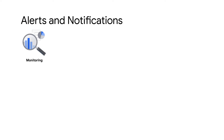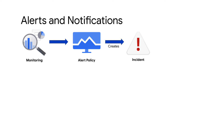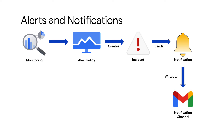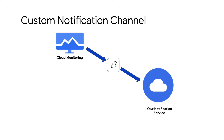A basic monitoring and alerting pipeline looks something like this. A cloud ops admin creates alerting policies to detect important events in their services. When a policy is triggered, it generates an incident. This in turn generates a notification, which is sent to several notification channels. To integrate a custom notification channel into your alerting pipeline, you can use either of two approaches.